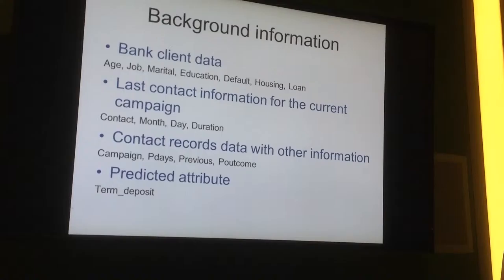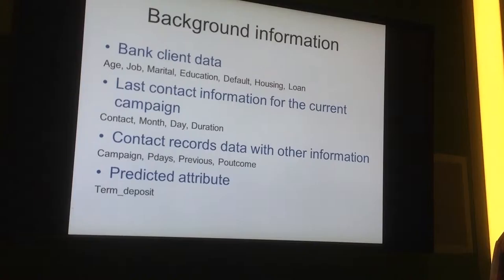The second big part is the last contact information for the current campaign. It consists of the contact type, such as mobile phone or email, and it also consists of the month, day, and duration of the last contact.